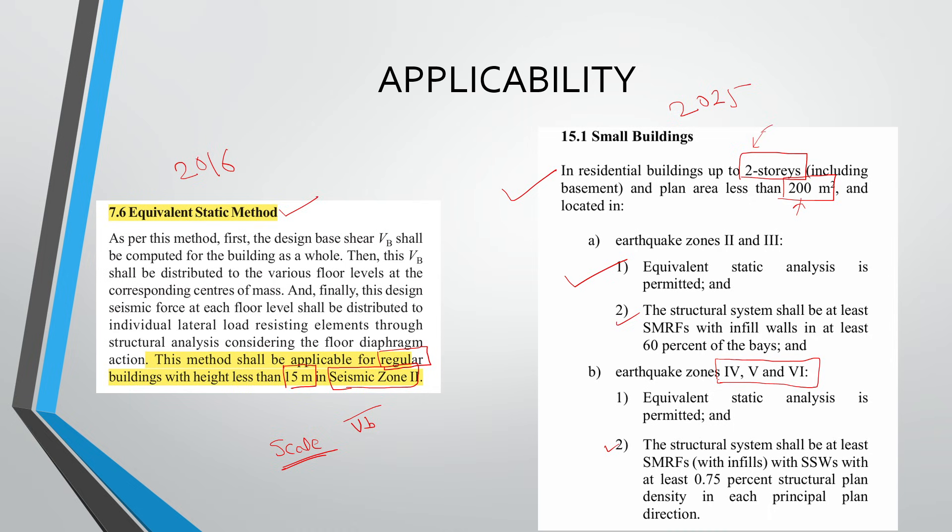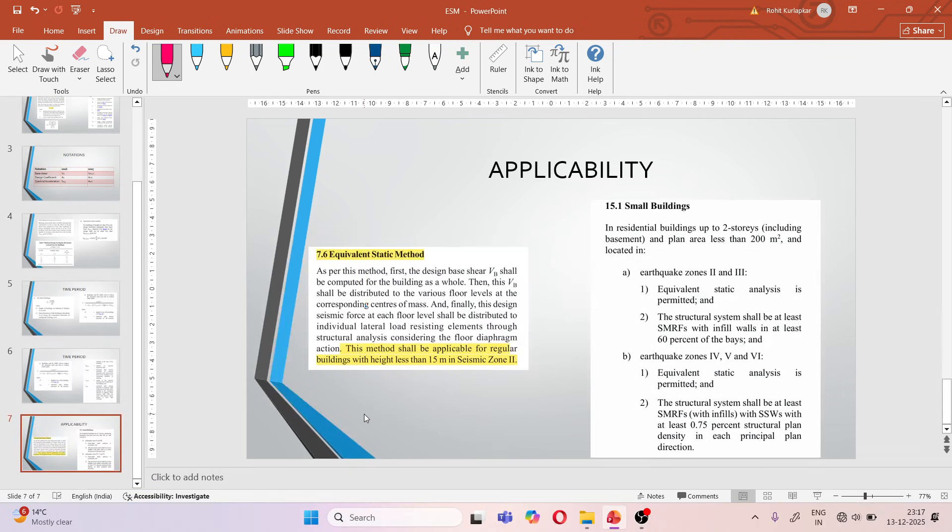So these are some of the points from comparison of 2016 and 2025. We'll take one example also to compare, and it has been found that the base shear is now increased two to three times than whatever we used to calculate using 2016. So we'll demonstrate this using one example. Thank you. Please like, share, and subscribe to the channel.